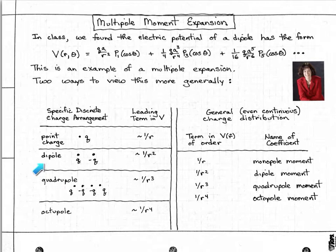For an electric dipole, like the one we talked about above, the leading term is 1 over r squared. For quadrupole, 1 over r cubed, octupole, 1 over r to the fourth, and so on.